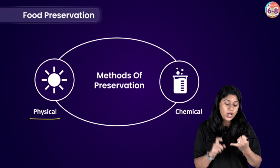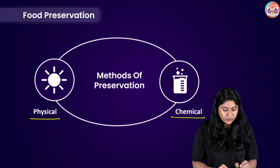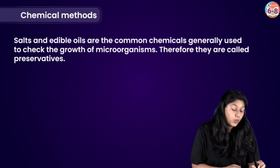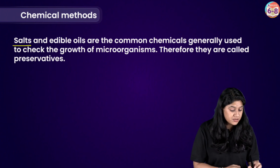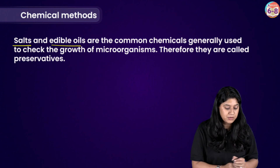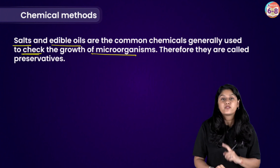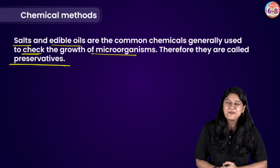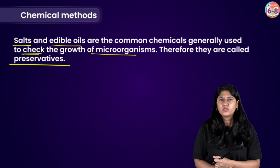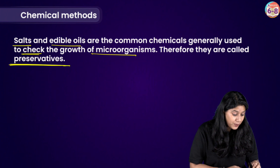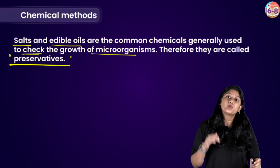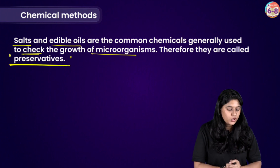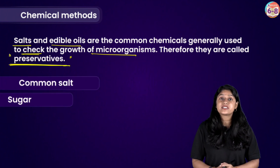So we are clear with the physical methods of preservation. We have three: storage and packaging, sun drying, and pasteurization. Now let's talk about the chemical methods of preservation. When we use salt or edible oils in preservation, it is the chemical method. This actually helps to check the growth of the microorganism, and therefore we call these substances preservatives. If you go to your kitchen and take a packed food, you will be able to find preservatives listed as an ingredient.